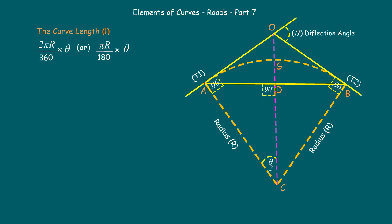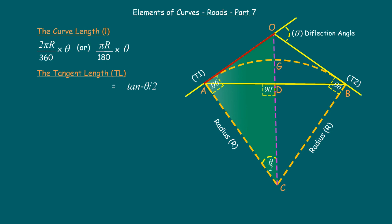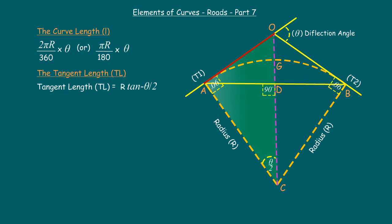Next is the tangent length TL. Considering the right-angle triangle: tan(θ/2) = opposite side / adjacent side. Here the opposite side is the tangent length and the adjacent side is the radius R. Therefore, tangent length TL = R × tan(θ/2).